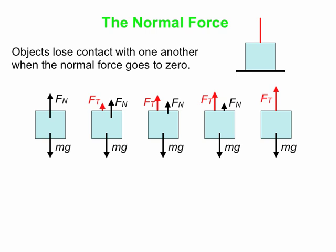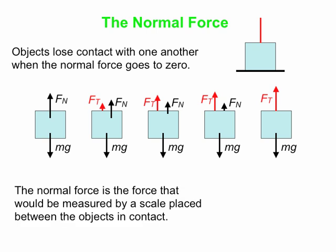Another way to look at the normal force is that it is the force that would be measured by a scale placed between the objects in contact. So if we go back to our simple box on the table situation, and then we just put a scale in between those objects, so we rest the box on the scale. Then the reading that we see on the scale is the value of the normal force that would be exerted by the table on the box if the box was just resting on the table again.